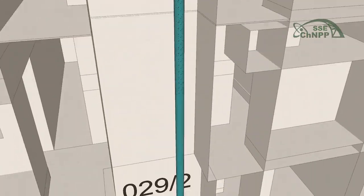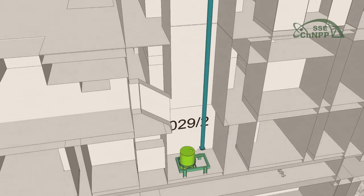Graphite chips are collected into a drum by a special device, preventing the spread of radioactive substances.